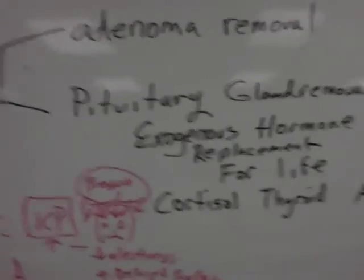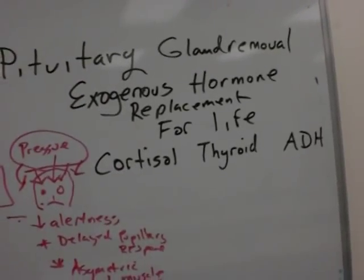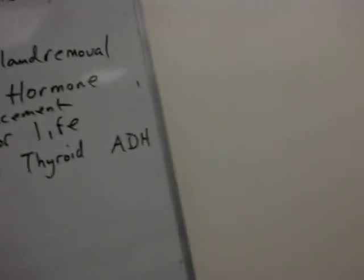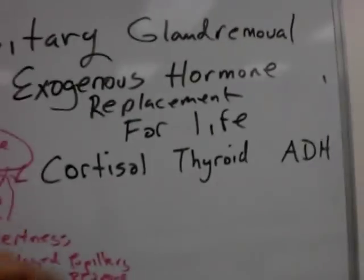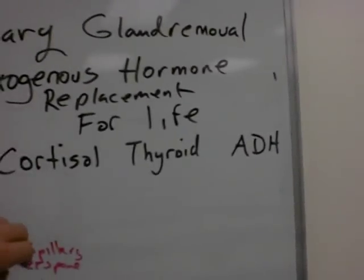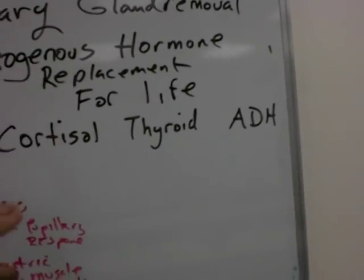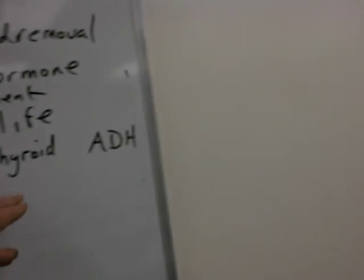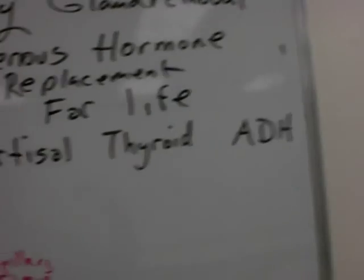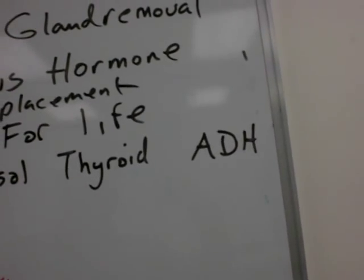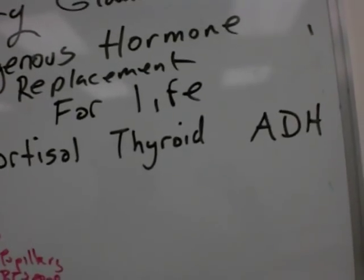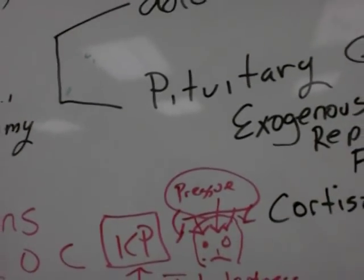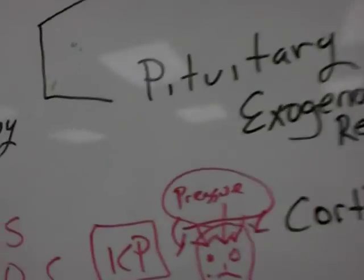Another option is complete removal of the pituitary gland. When we remove the pituitary gland altogether, the patient will end up on permanent — for life — exogenous hormone replacement therapy. The pituitary gland controls the release of glucocorticoids from the adrenal gland, so the patient will be dependent on exogenous cortisol. The patient will also need thyroid replacement therapy and antidiuretic hormone, which comes from the pituitary gland. So when we remove the whole pituitary gland, the patient will be on exogenous hormone replacement therapy for life.